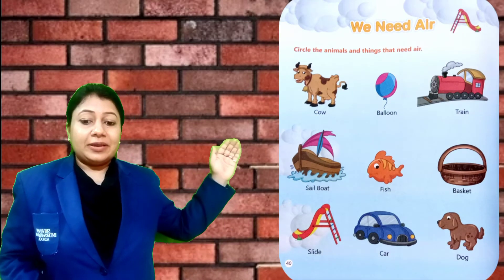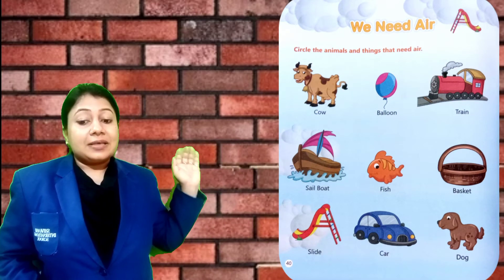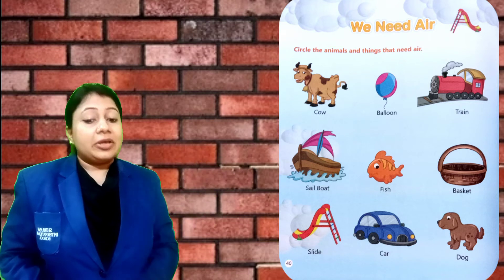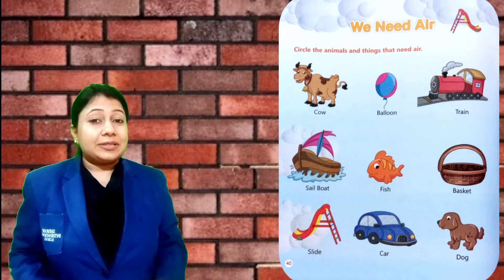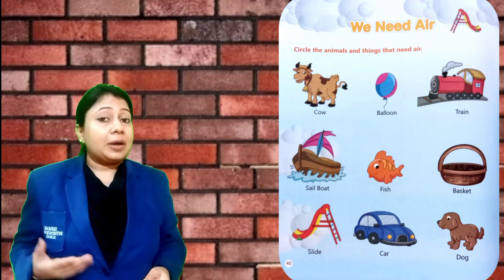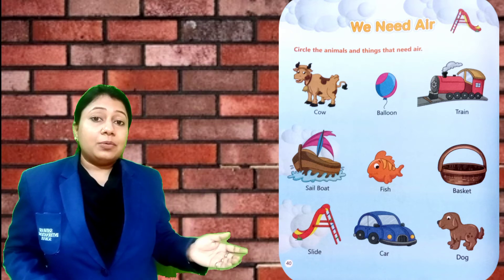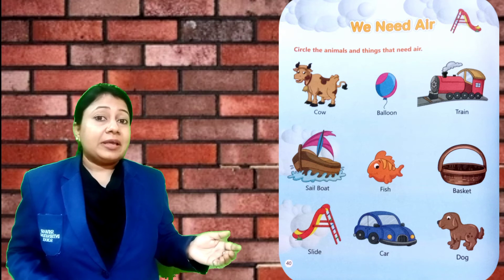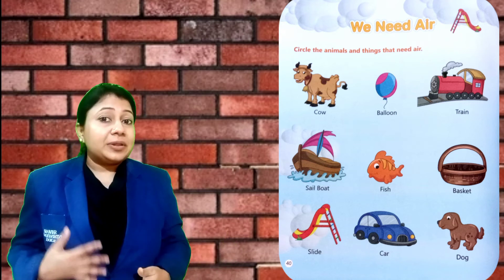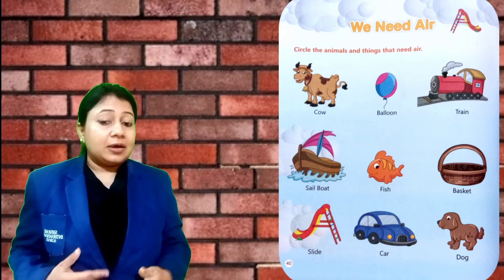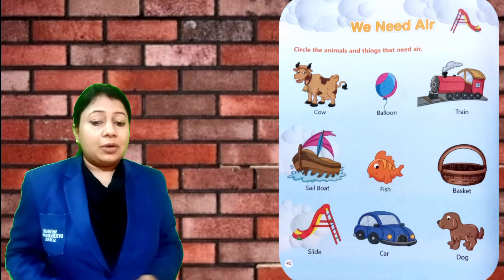Now move to next page. The heading here is: We Need Air. The activity says: circle the animals and things that need air. There are some animals and things here. Which ones need air? Cow — cow is an animal, a living thing. So cow breathes. Air is most important for cow.